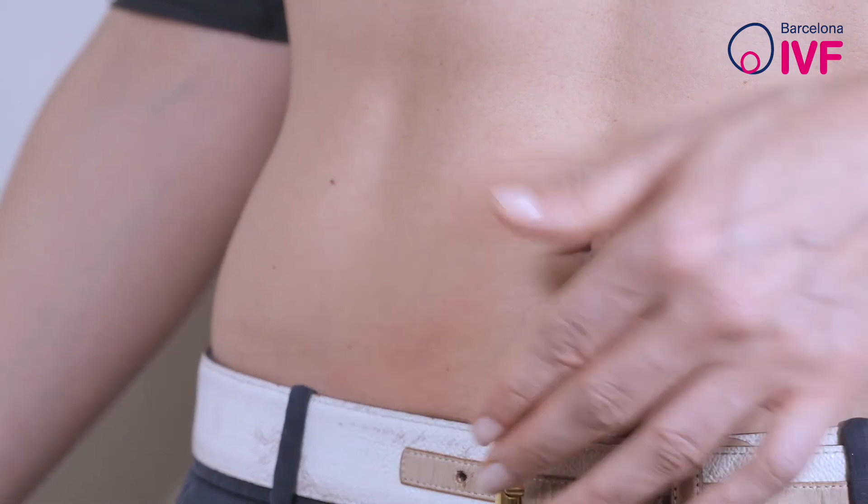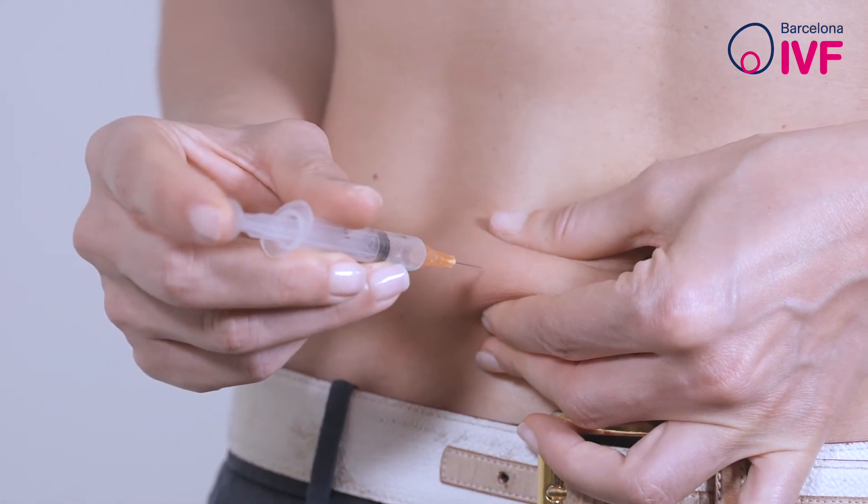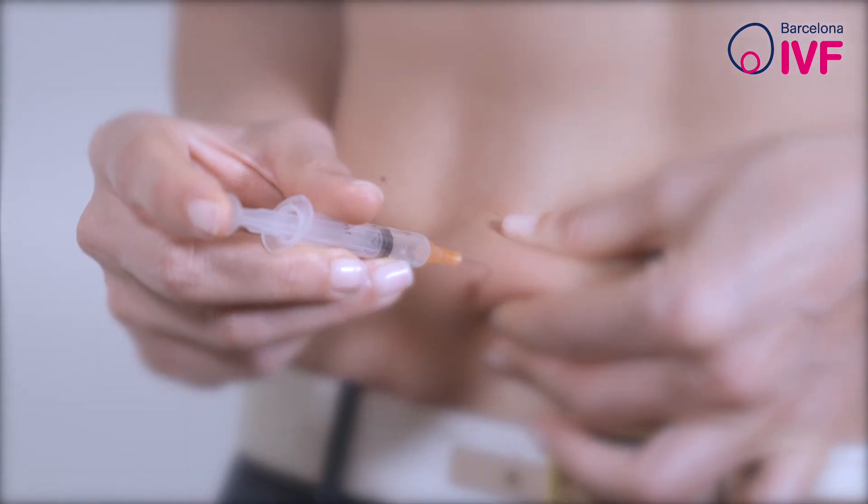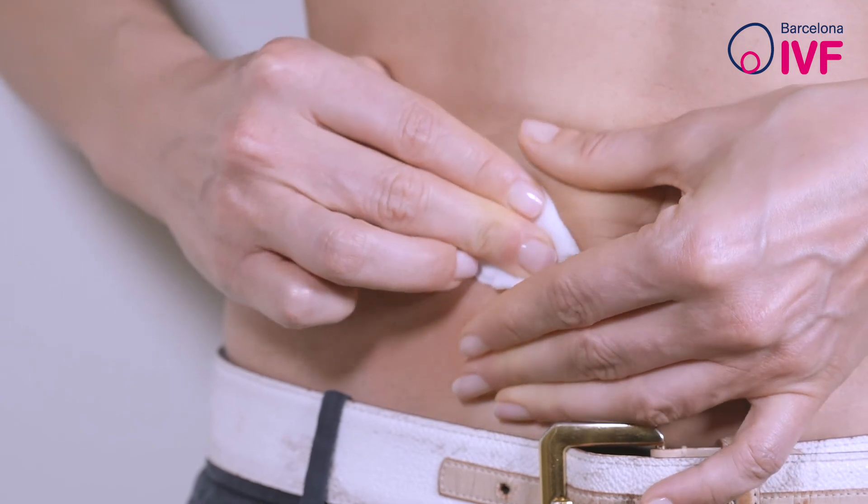With one hand, pinch the area of the abdomen where the medication is going to be administered, and with the other, take the syringe and insert the needle as perpendicular as possible into the skin. Push the plunger all the way in and then gently withdraw the needle and put pressure on the injection site for a few seconds.